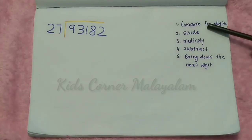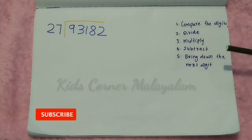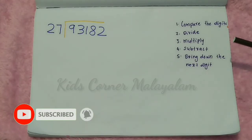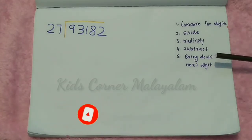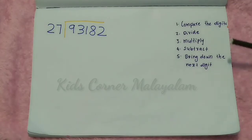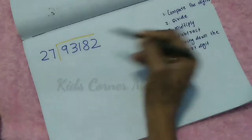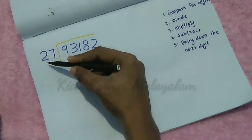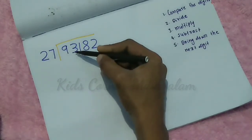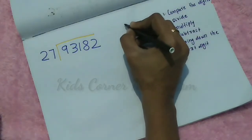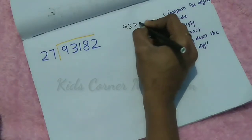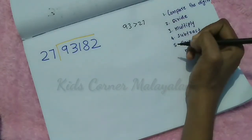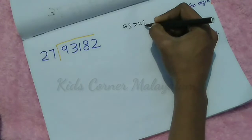We will try to make it easy. To begin, we compare the digits. The first step is to compare the first digits of the dividend with the divisor. We compare those two digits. Is it greater than 27? Yes, this is correct. The first step is done.